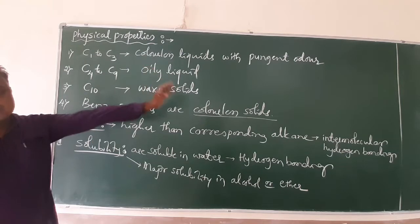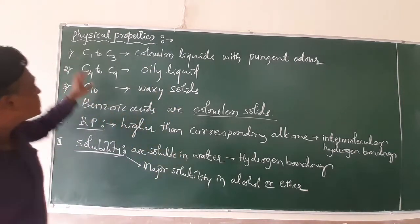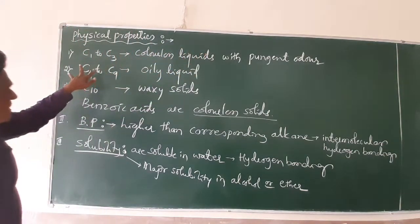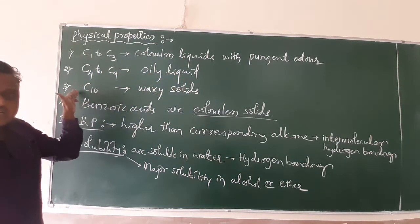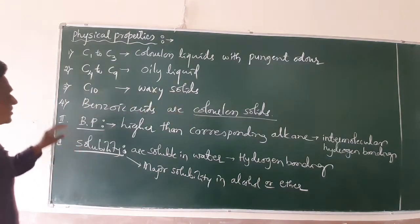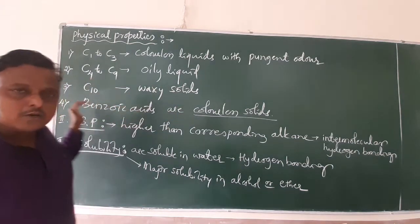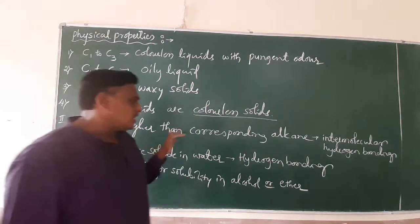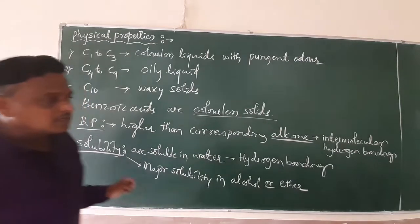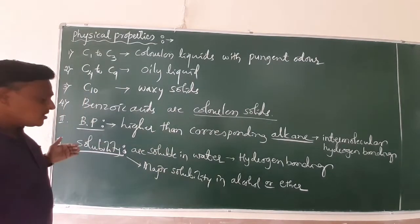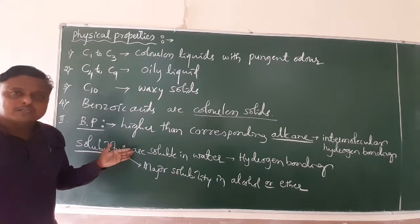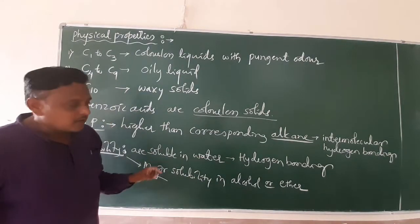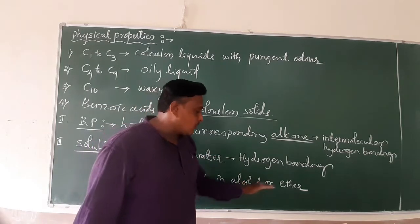To summarize the physical properties of carboxylic acids: the first three (C1–C3) are colorless liquids; the next six (C4–C9) are oily liquids; and C10 onwards they are waxy solids. Benzoic acid and its homologues — aromatic carboxylic acids — are colorless solids. Boiling points are always higher than corresponding alkanes due to intermolecular hydrogen bonding. Lower carboxylic acids are soluble in water, while higher carboxylic acids dissolve in organic solvents like alcohol and ether.